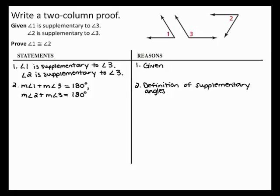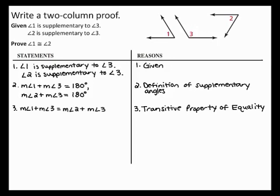Now, because the measure of angle 1 plus the measure of angle 3 and the measure of angle 2 plus the measure of angle 3 both equal 180 degrees, you can use the transitive property of equality to state that the measure of angle 1 plus the measure of angle 3 equals the measure of angle 2 plus the measure of angle 3.